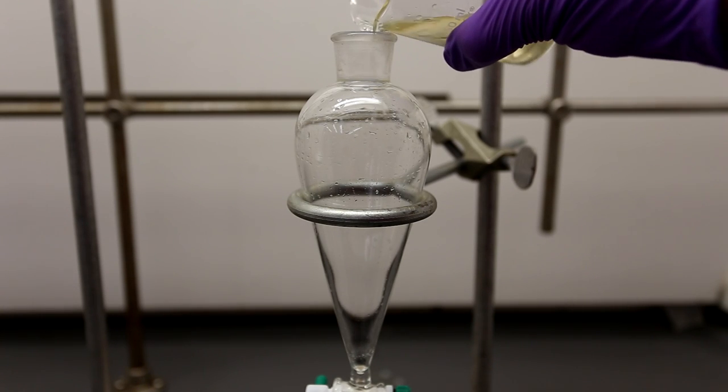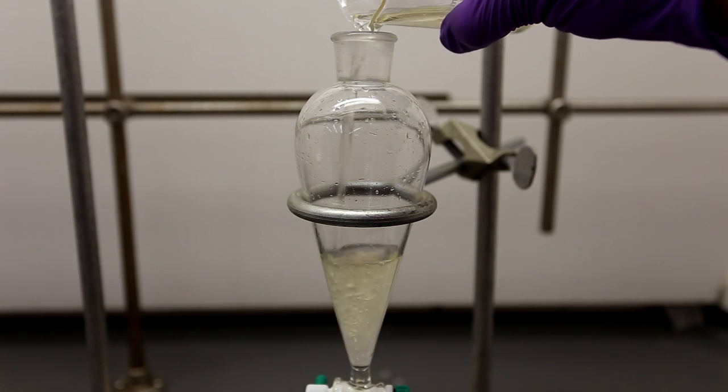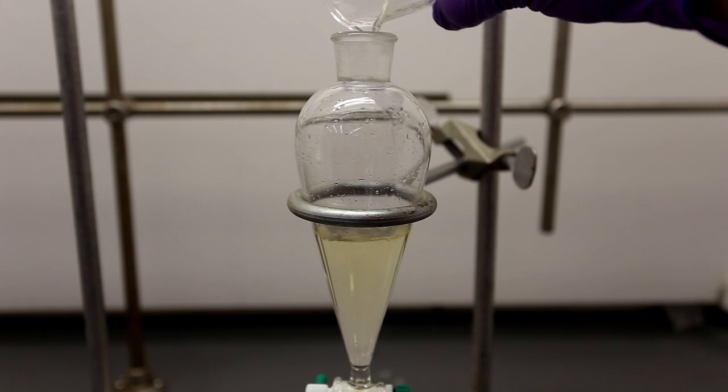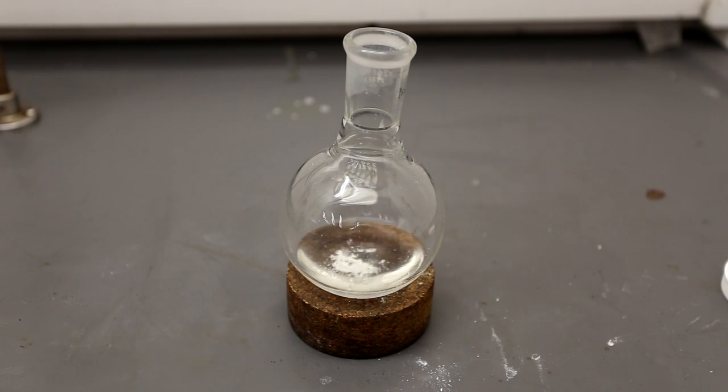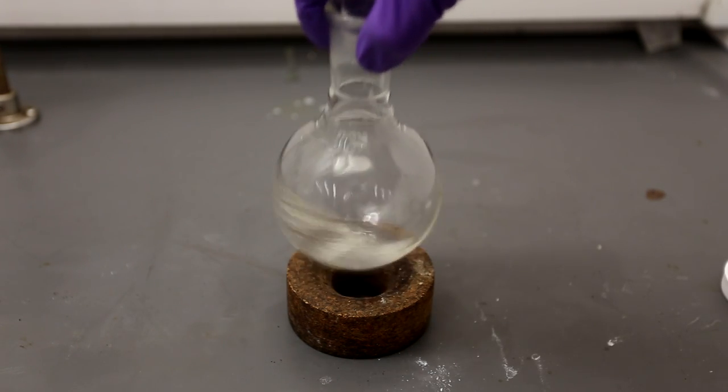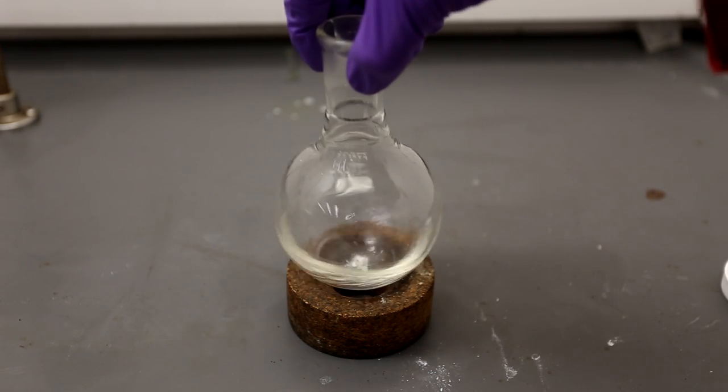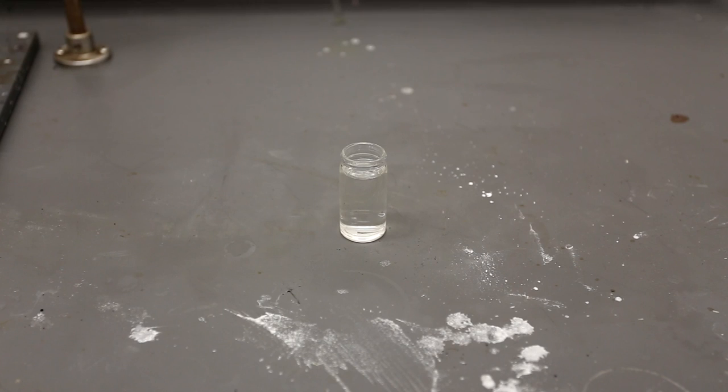The aqueous layer was transferred back to the separatory funnel and it was further extracted 5 times with 5 milliliters of ether each time. The ether washings collected in the round bottom flask were then dried using a minimal amount of magnesium sulfate. The ether butyric acid solution was transferred to a dram vial and allowed to evaporate.